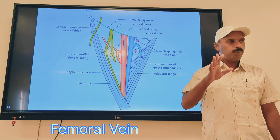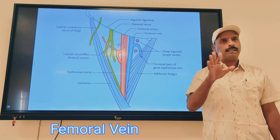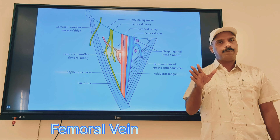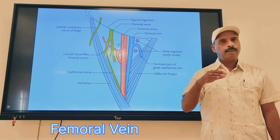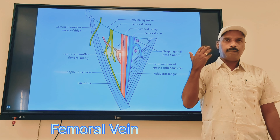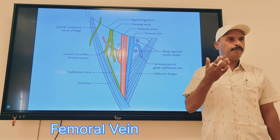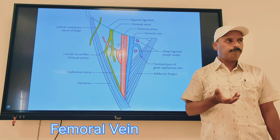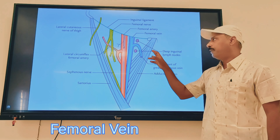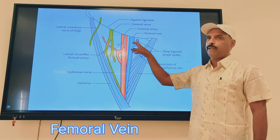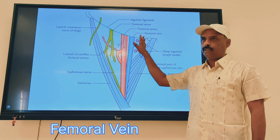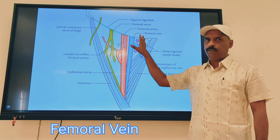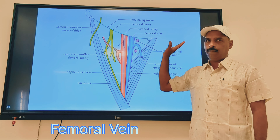These include the deep profunda femoral vein, and also the medial and lateral circumflex femoral veins. So tributaries accompanying the deep branches of the femoral artery, and the great saphenous vein — these are the tributaries of the femoral vein.